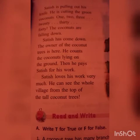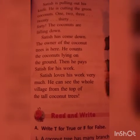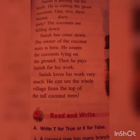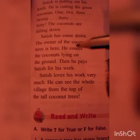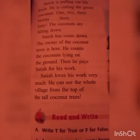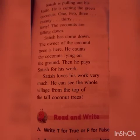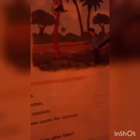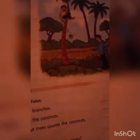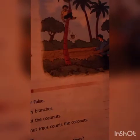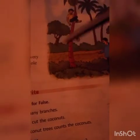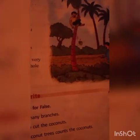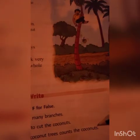All the coconuts are falling on the ground. Sadeesh has come down and the owner of the coconut trees is here. He counts the coconuts lying on the ground, then he pays Sadeesh for his work. The owner will count the coconuts and pay Sadeesh for the number of coconuts he has cut down.